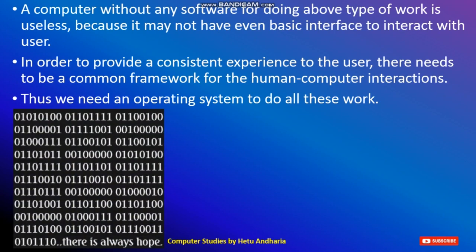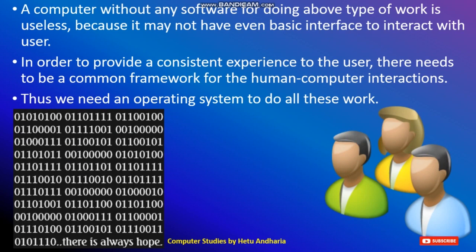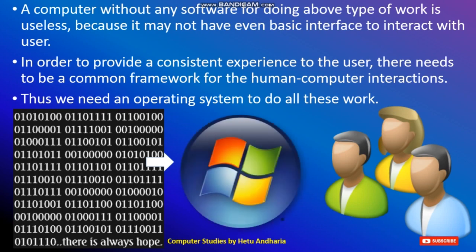Everything in the computer is stored in 0s and 1s. The user cannot understand what is written in binary. The operating system transfers this information to the user on the monitor. Once the operating system is installed, we don't see 0s and 1s. Whatever the user types is transferred back to the computer and stored in the form of 0s and 1s. This is the role of the operating system.